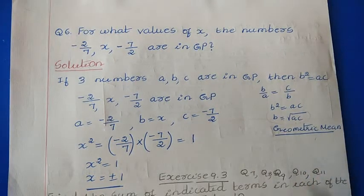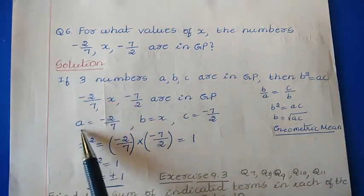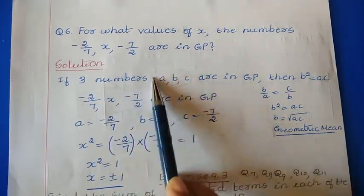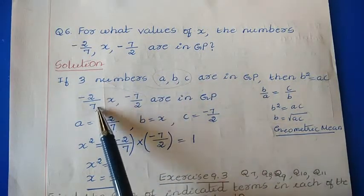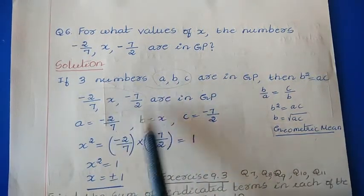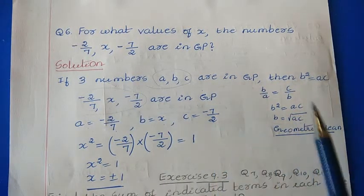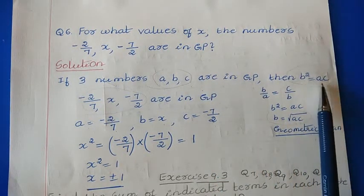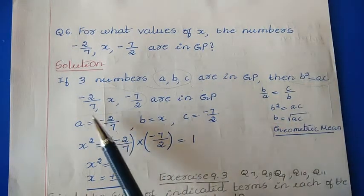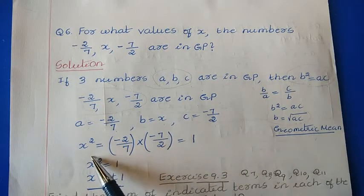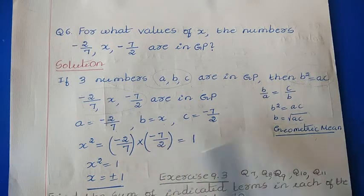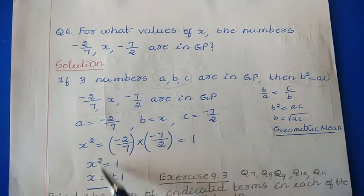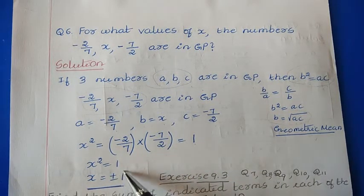Comparing with a, b, c: a = -2/7, b = x, c = -7/2. Since the three terms are in GP, we write b² = ac, so x² = (-2/7) × (-7/2). Cancelling the values, we get x² = 1, which means x = ±1.